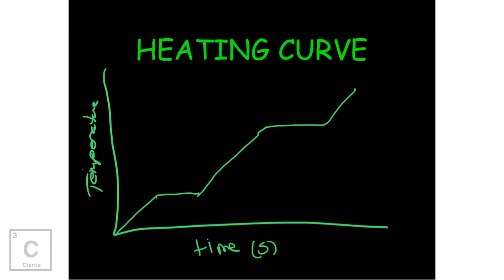Let's notice our axes. As we go across the x-axis, more and more time is going by. As we increase up the y-axis, our temperature is getting hotter and hotter. Down here, this is when we have a solid. Ice doesn't melt immediately — it's got to warm up first. So as time goes by, we're adding more heat but we're still in the solid form. Then here we start to melt. This flat region right here — this is the heat of fusion. All of the energy is going into melting. You start at the melting point and it stays constant all the way until everything is melted.